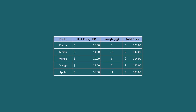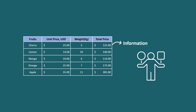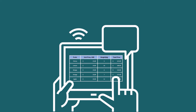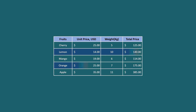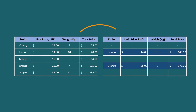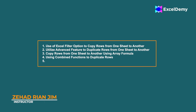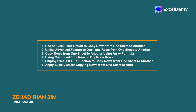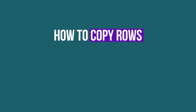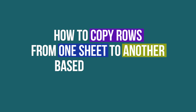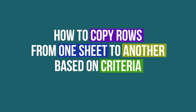Hello everyone. When you have a dataset containing information about different categories of products and you need to monitor each category carefully, copying rows from one sheet to another is the best option for you. This is Chihadri Anjim from Excel Demi, and today we'll learn six methods on how to copy rows from one sheet to another based on criteria in Excel.